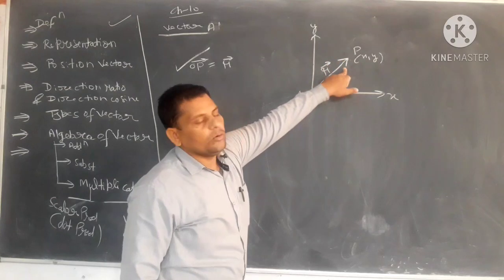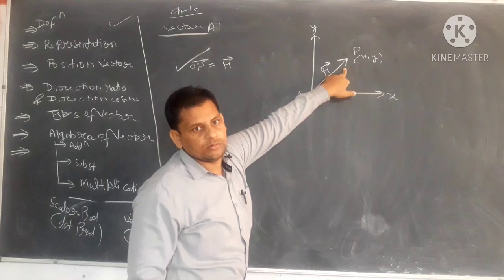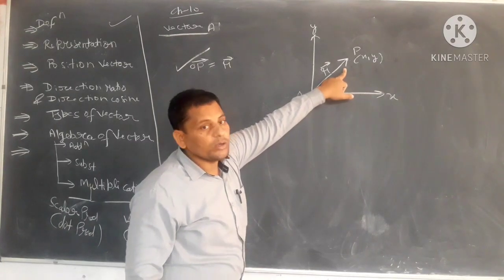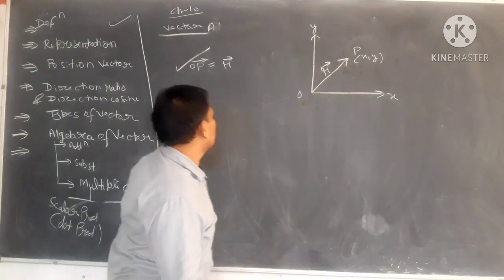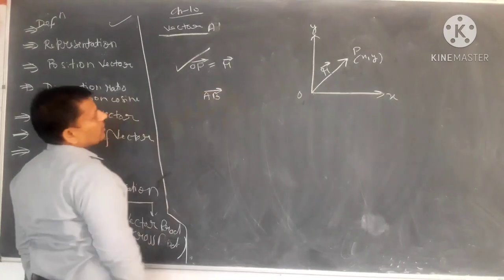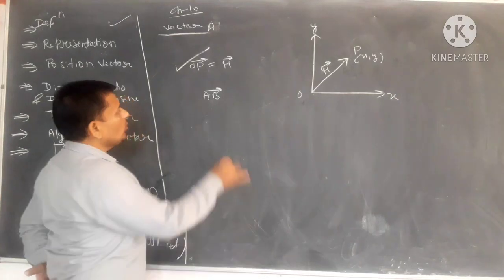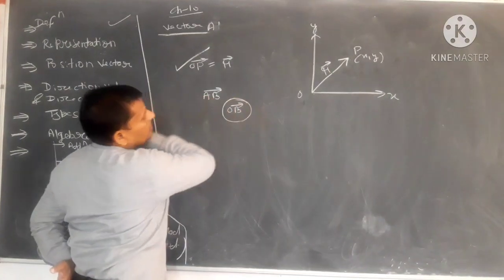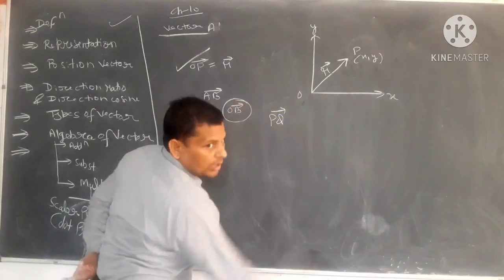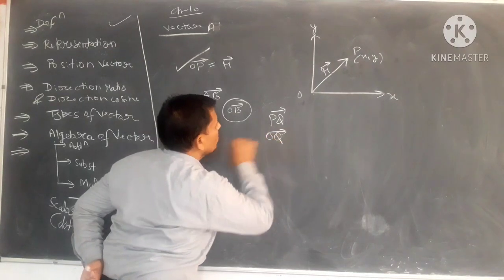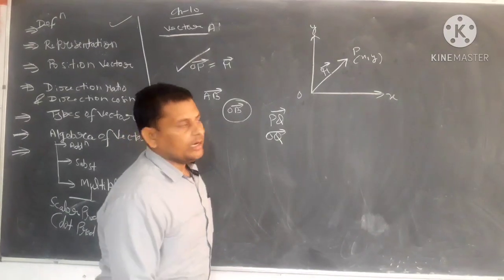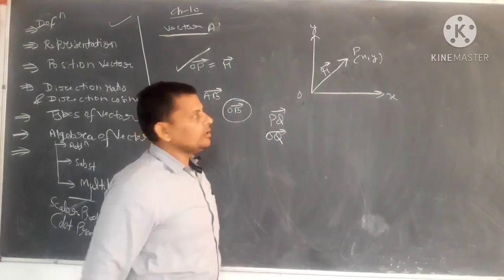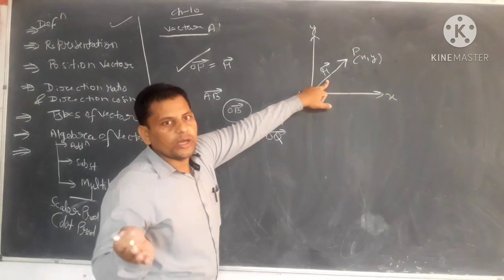For any point, its distance from the origin — if you join that point to the origin — the vector formed is called the position vector. For example, for vector AB, if you shift point A to the origin, it becomes OB. Then OB is the position vector of point B. Similarly for PQ, shift P to the origin to get OQ — that is the position vector of point Q. So, the distance of any point from the origin, or joining that point from the origin, gives the position vector.